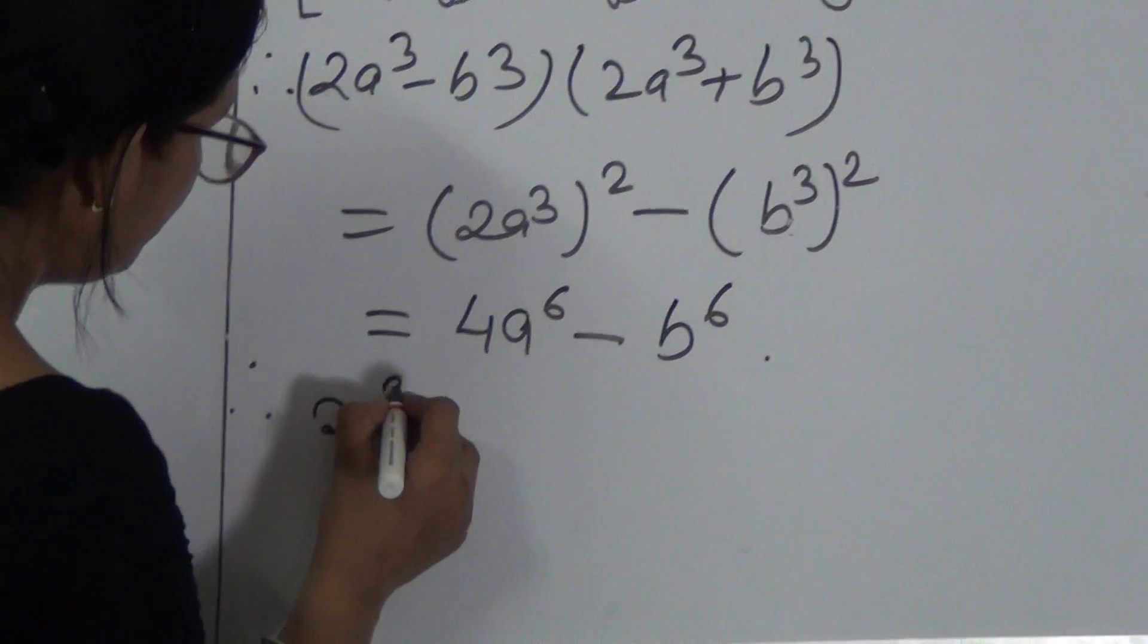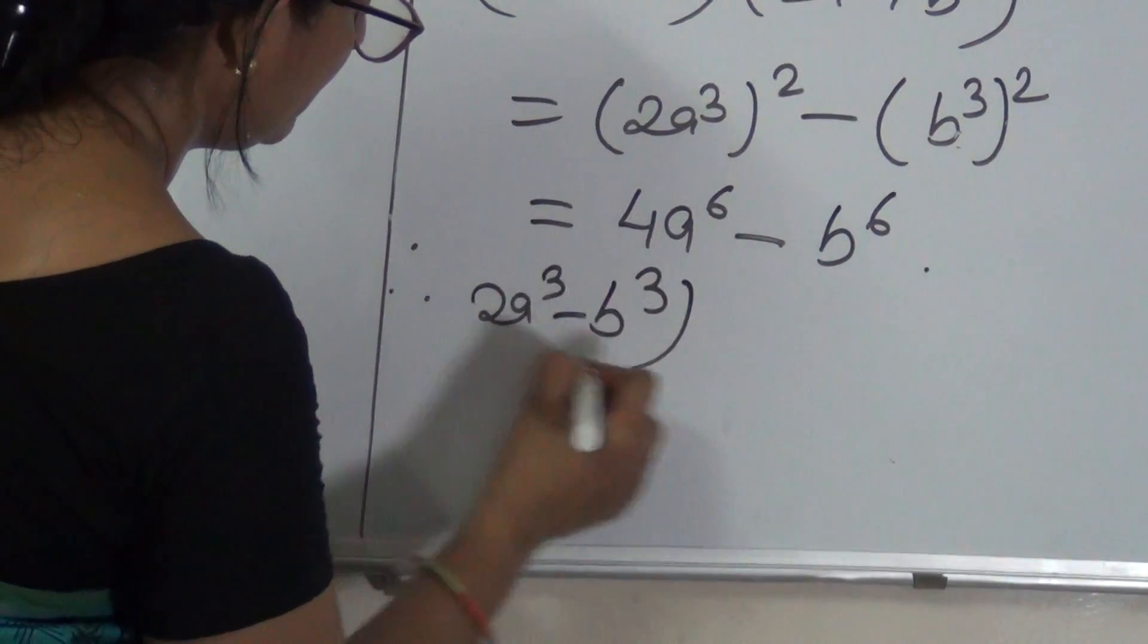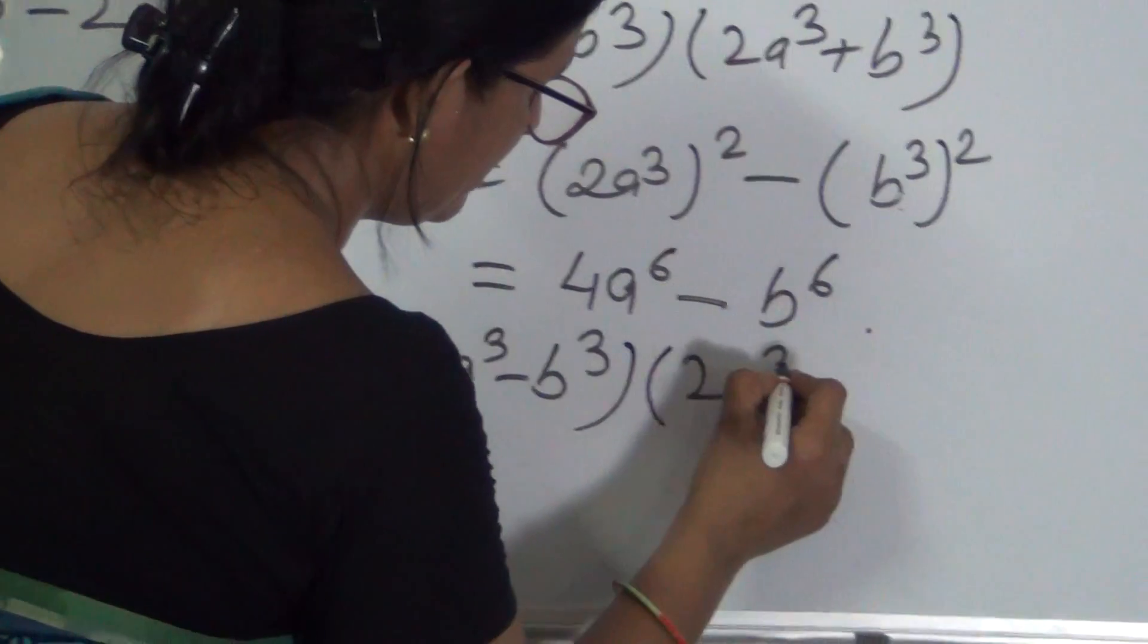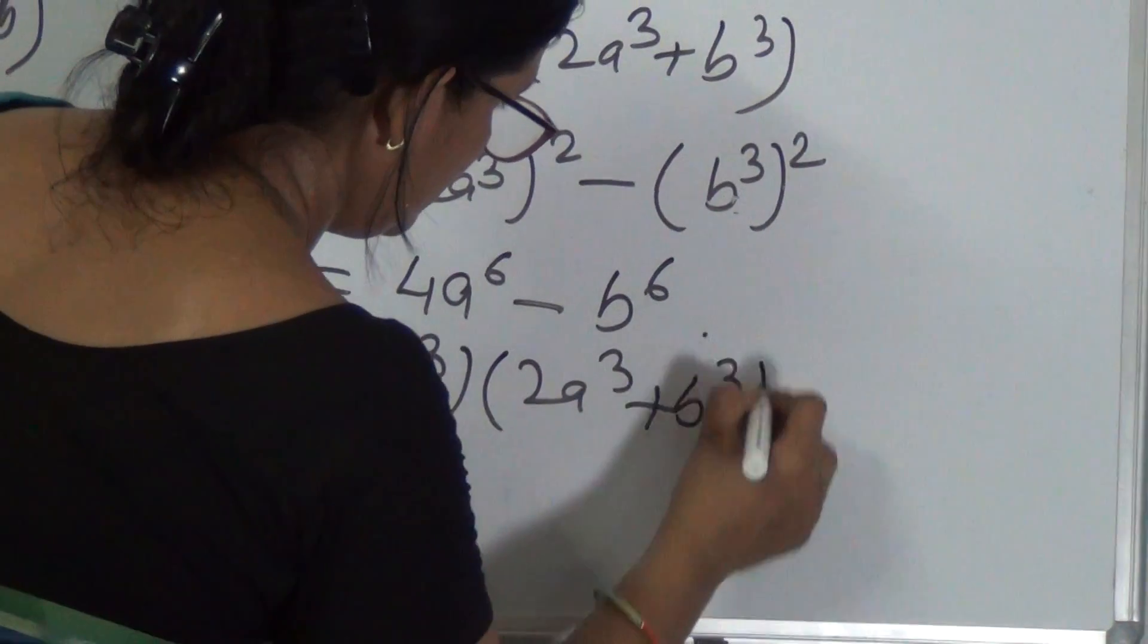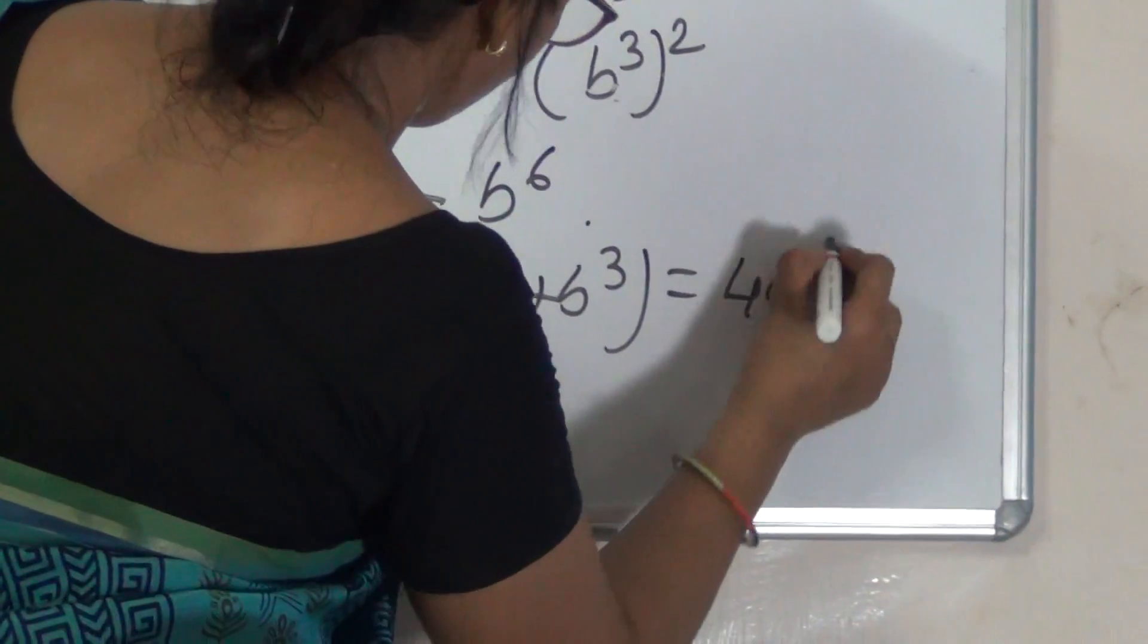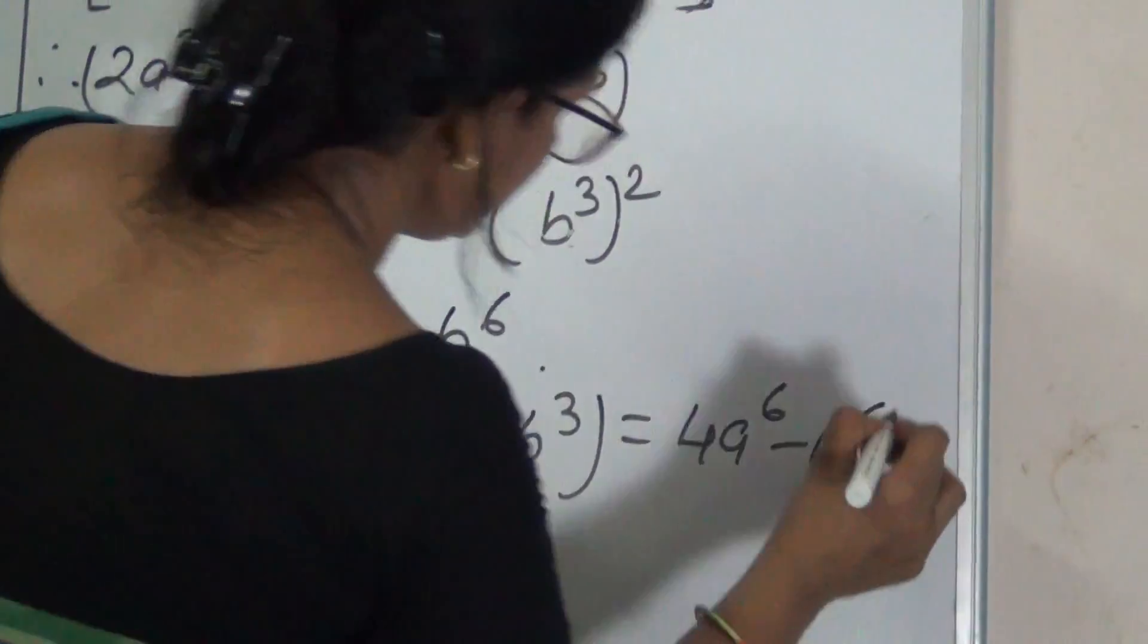Therefore, 2A cube minus B cube into 2A cube plus B cube is equal to 4A to the power 6 minus B to the power 6.